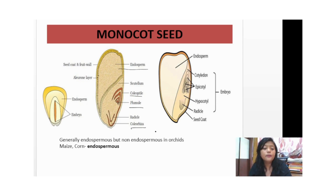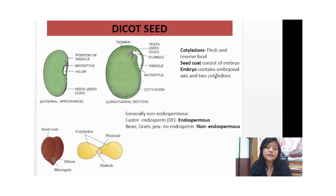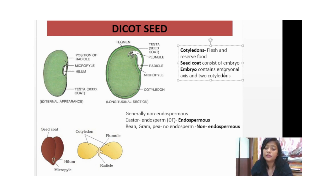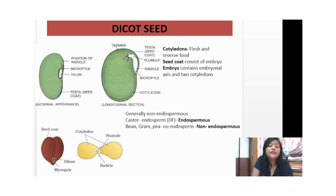Moving on to dicot seeds: in dicot seeds, the cotyledons are fleshy and reserve food. Dicot seeds are generally non-endospermous because they do not contain endosperm — the cotyledons provide the food to the seed. An exception is castor, which is endospermous due to the process of double fertilization. Examples of non-endospermous dicot seeds include bean, gram, and pea.